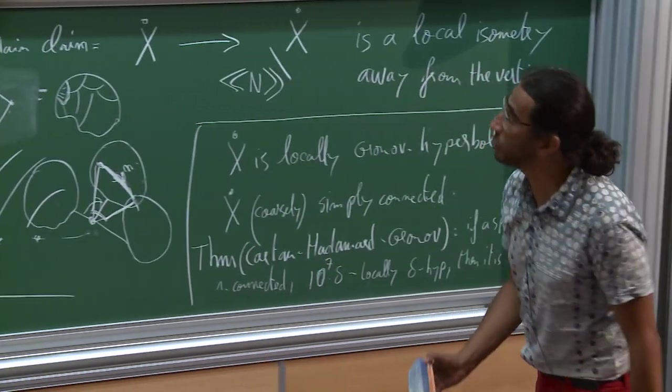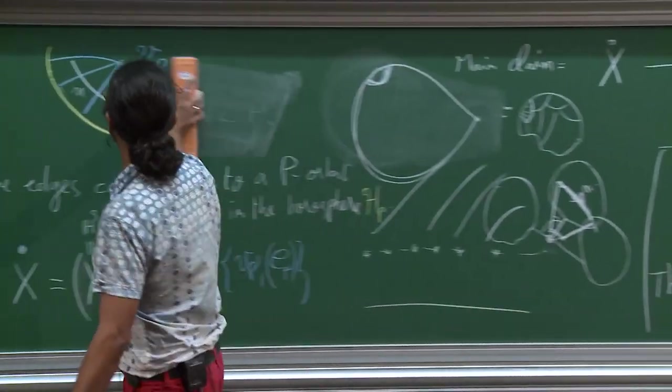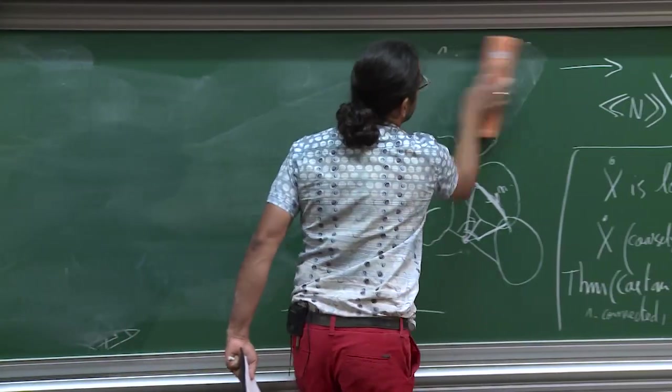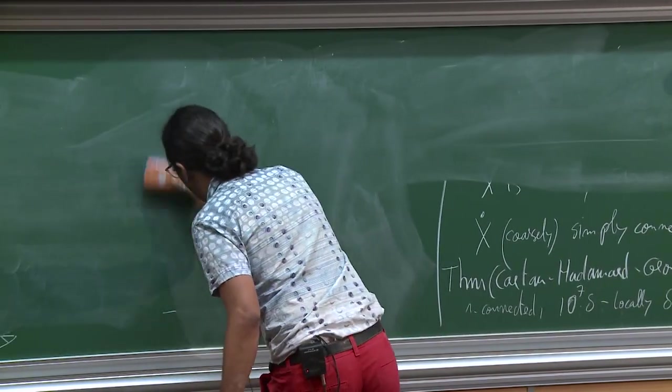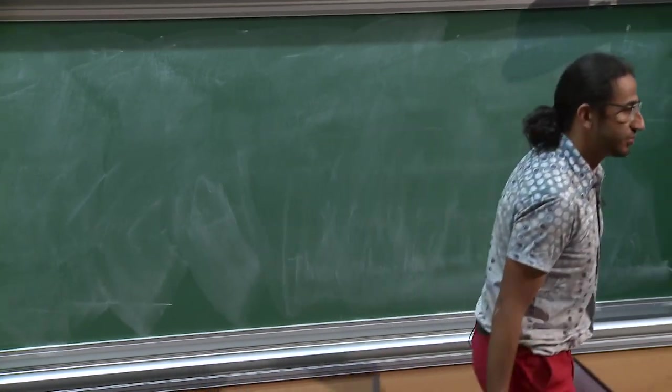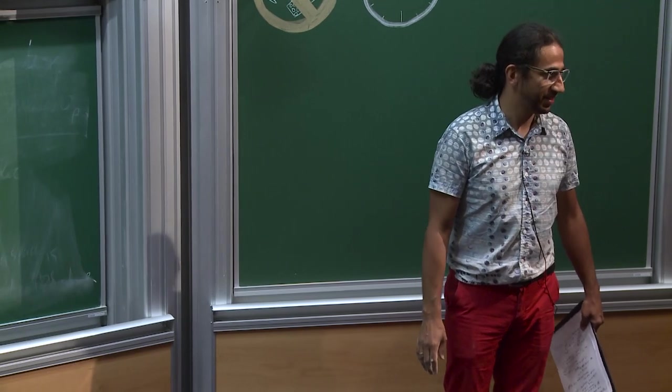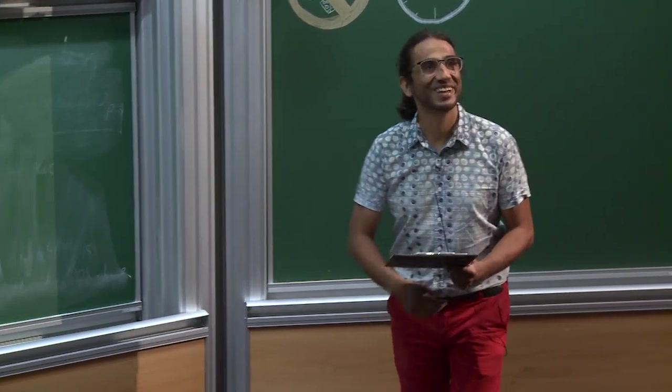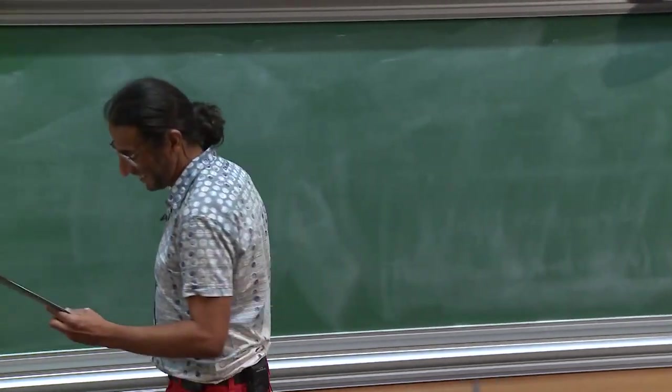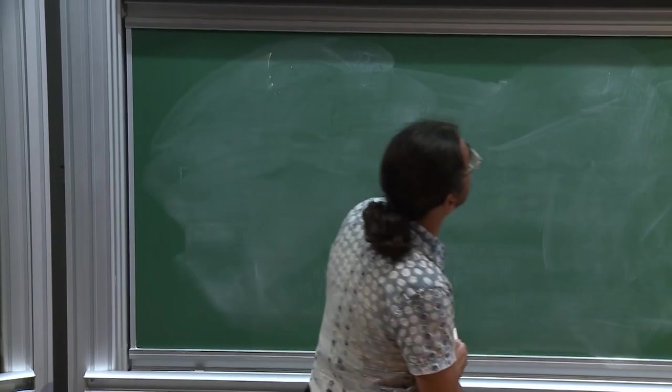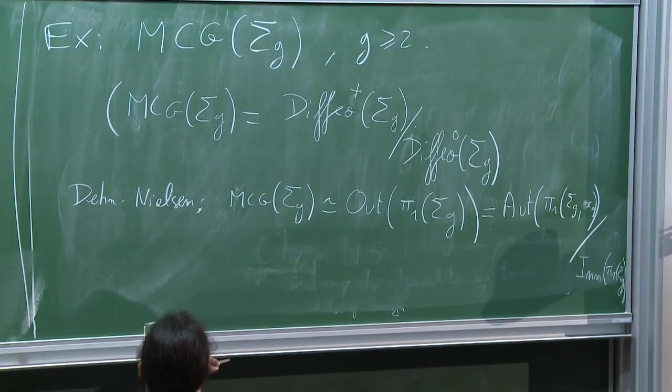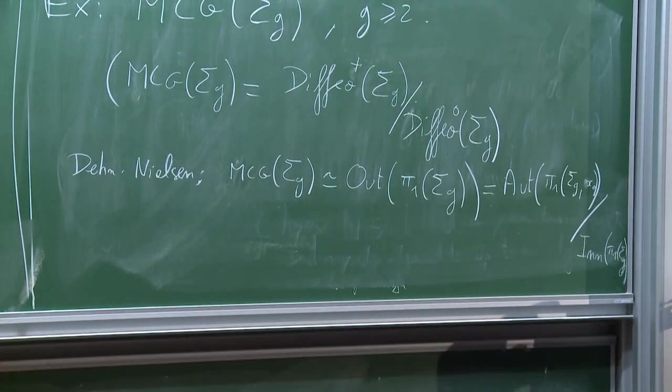In the linear case, we are interested in GL_n(Z), which is the automorphism group of Z^n. And here we have an automorphism group of hyperbolic lattice instead of an Euclidean lattice. So I forgot to check what time was the beginning and end of this. I think 10:30, right? I started at 10:30? The usual 10:30.